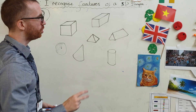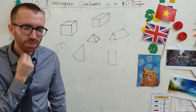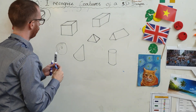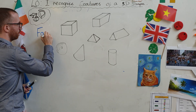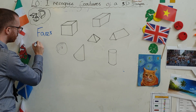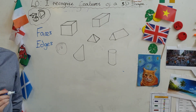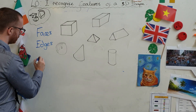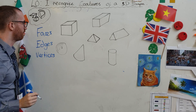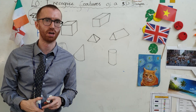With 2D shapes, we were looking for sides and corners. With 3D shapes, we're looking for something a little bit different. We are looking for faces, edges, and this is the tricky one — vertices. Faces, edges, and vertices. We're going to work out what all of those are now with a 3D shape.